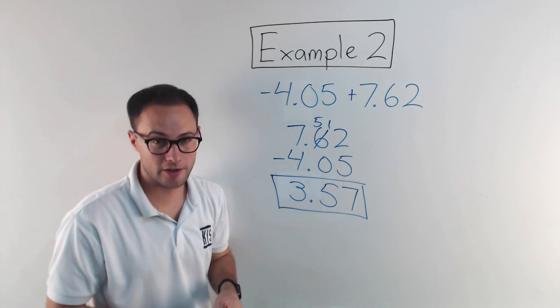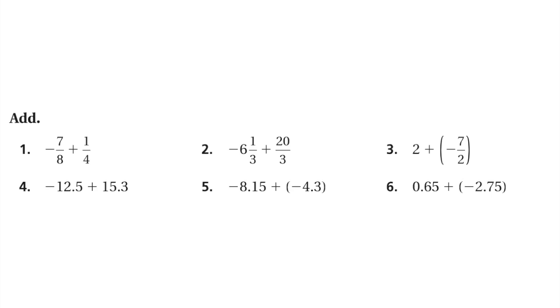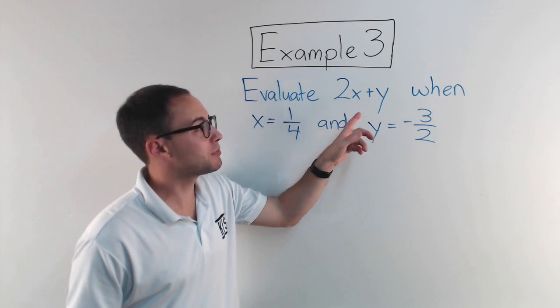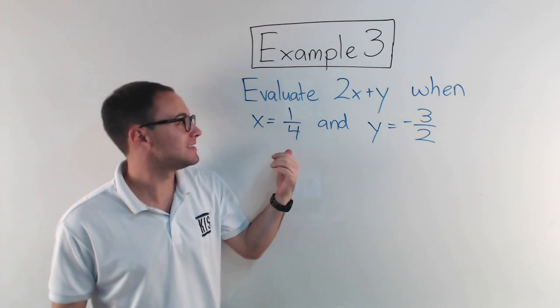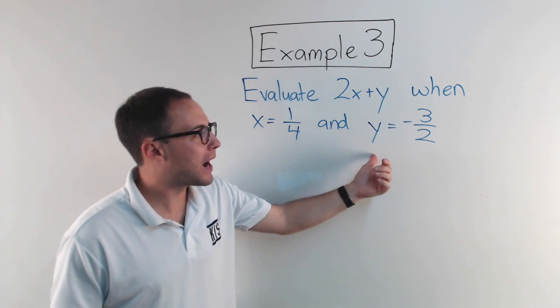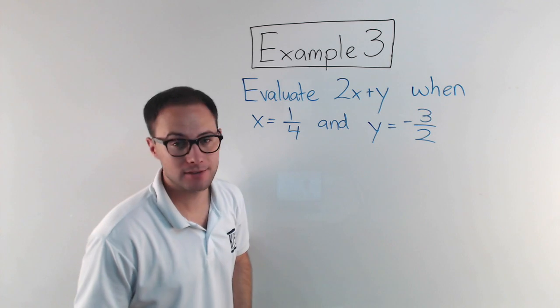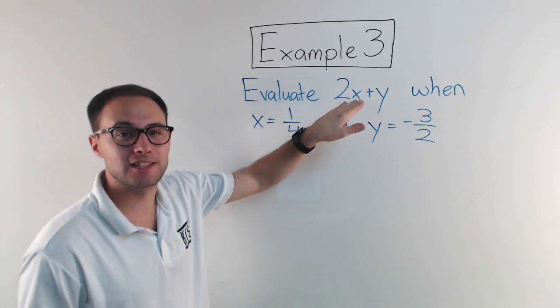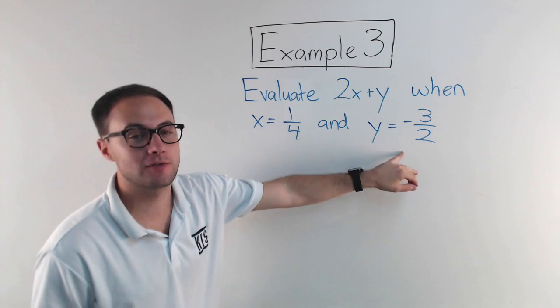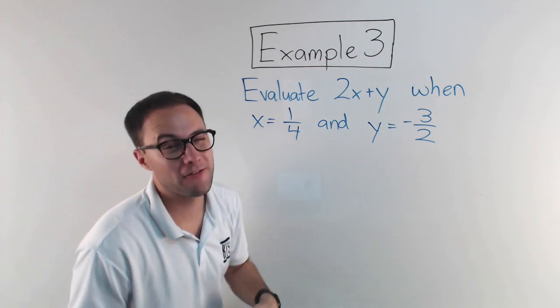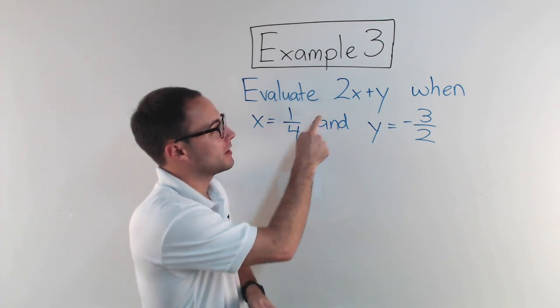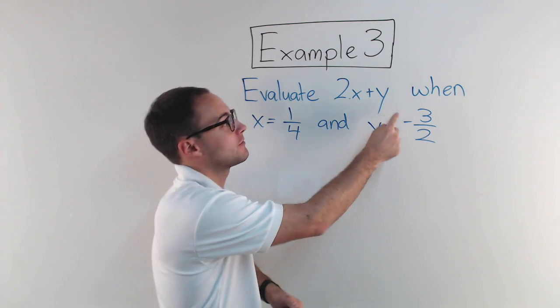Here's something to try on your own. Here's our last example. Example three, evaluate two-x-y when x is equal to one-fourth and y is equal to negative three-halves. Well, we know when we evaluate algebraic expressions and they give us values for the variables, my first step is to substitute.